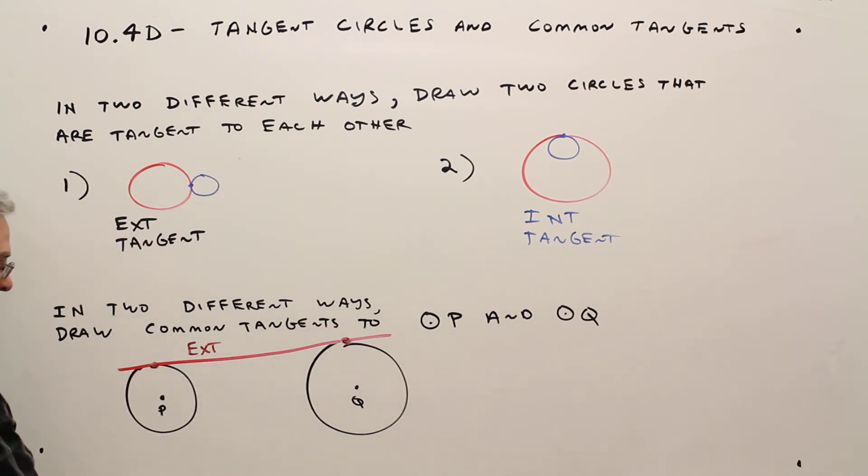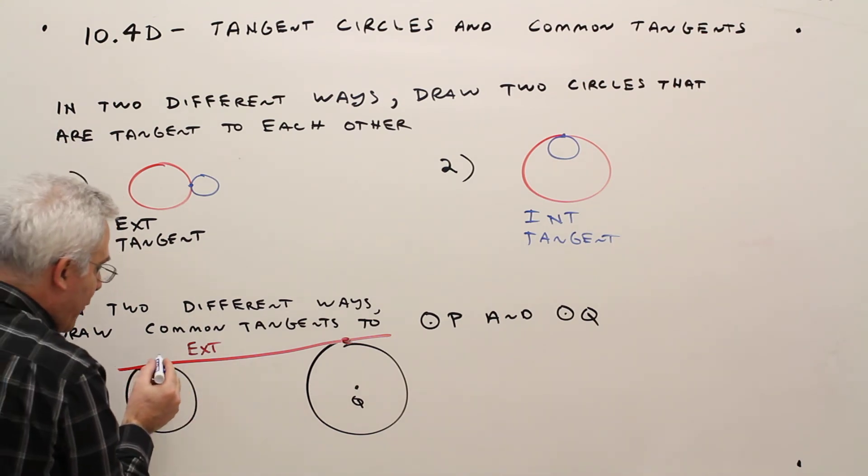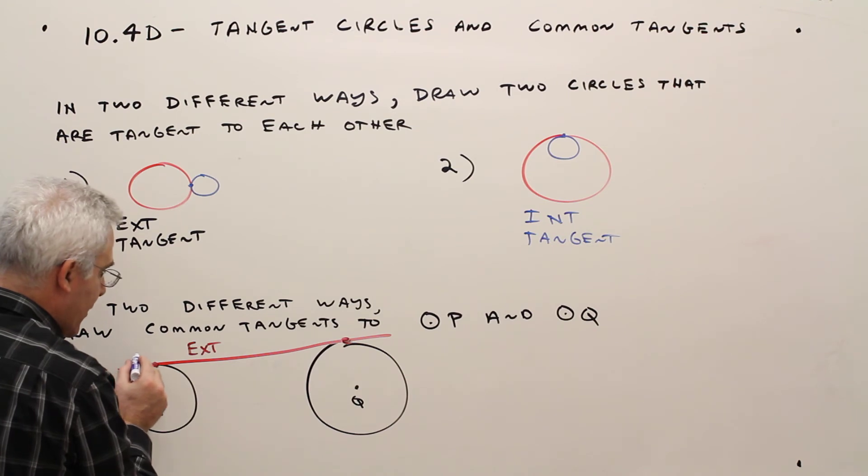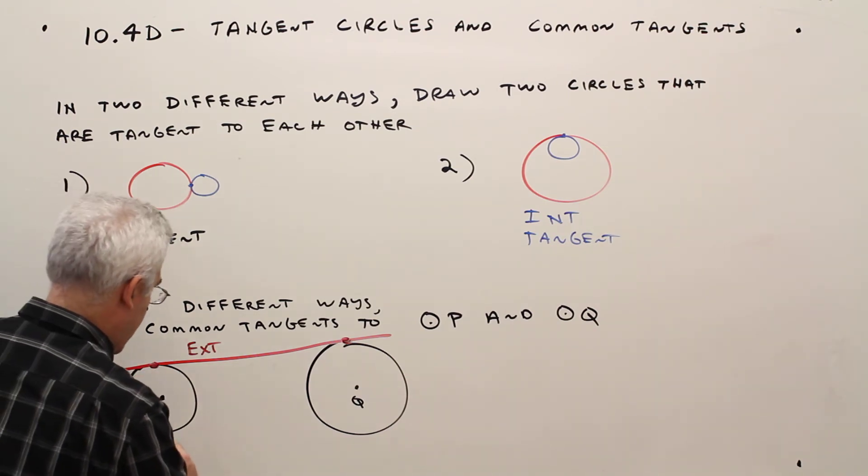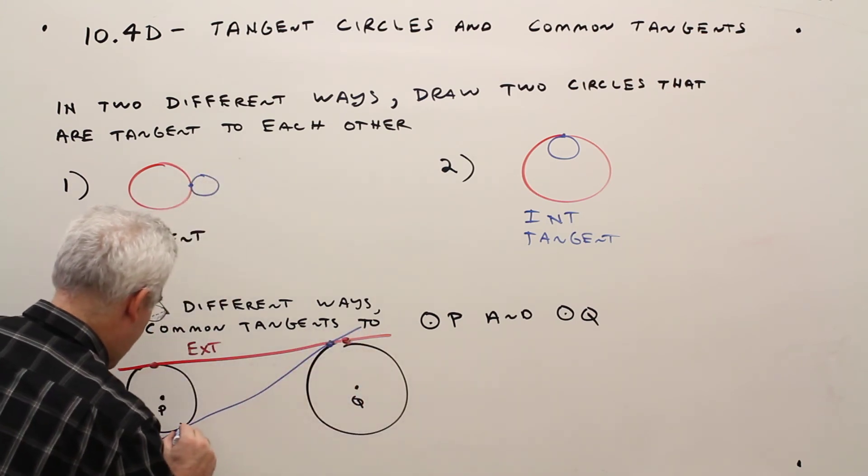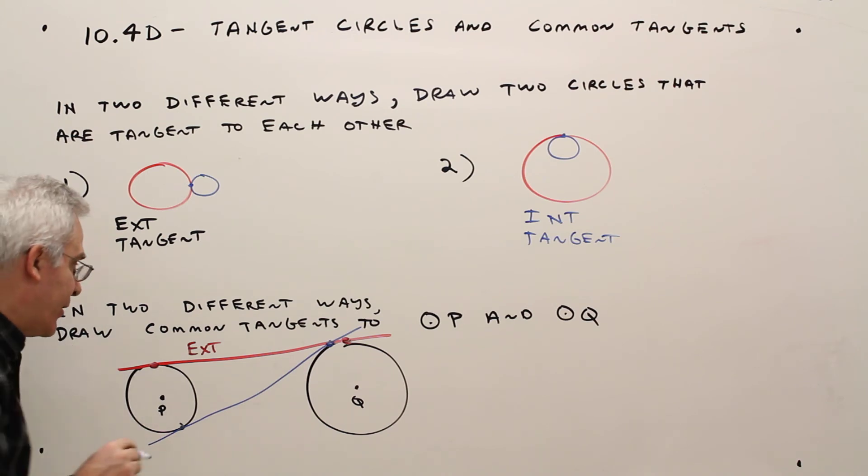However, don't forget that you could also have it down there. You could also have one like so. I'll go this way... it's not the best, but that would be an internal common tangent.